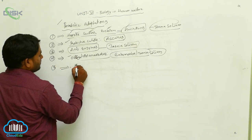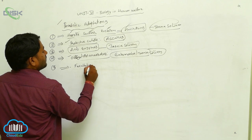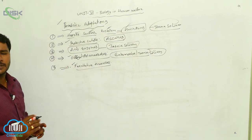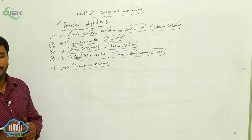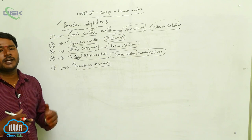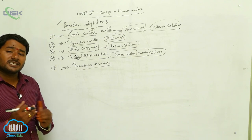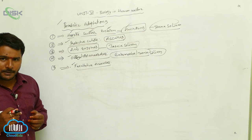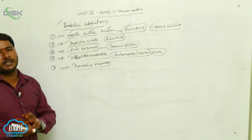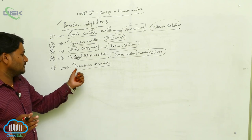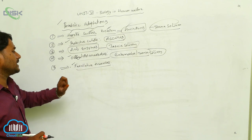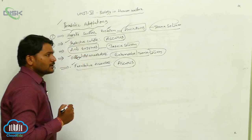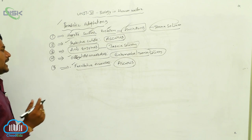Some parasites are facultative anaerobes. Facultative anaerobes are parasites which can perform anaerobic respiration in the absence of oxygen, and if oxygen is available, they can also perform aerobic respiration. Based on the conditions, the parasite will perform both types of respiration. The example is Ascaris lumbricoides, which can perform both aerobic and anaerobic respiration.